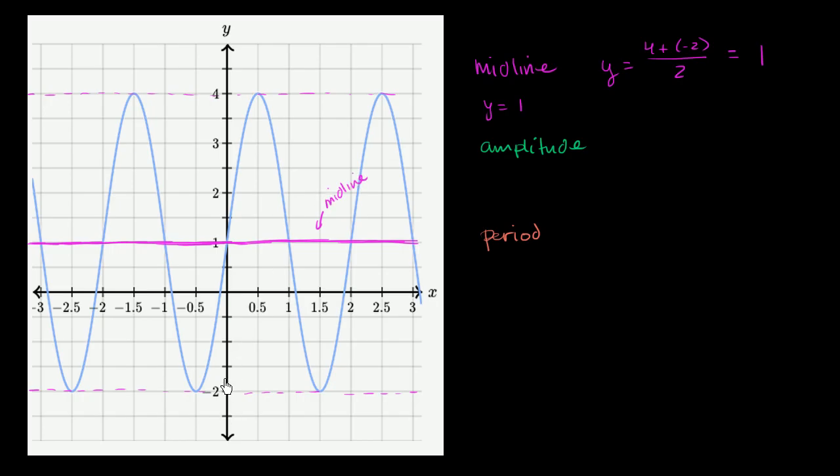Now let's think about the amplitude. Well, the amplitude is how much this function varies from the midline, either above the midline or below the midline. And the midline's in the middle, so it's going to be the same amount whether you go above or below.